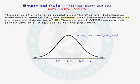Two standard deviations above the mean will be 130. Three standard deviations above the mean, 145. Two standard deviations below the mean will be 70. Three standard deviations below the mean will be 55.